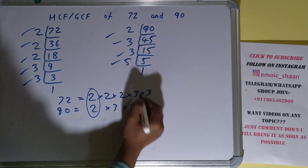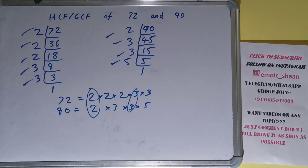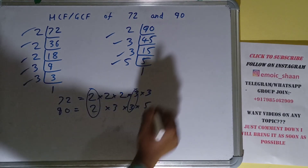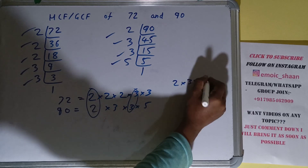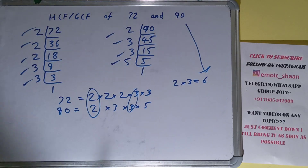We have this 2 in common, and we have this 3 in common. Do we have anything extra in common? No. So the answer will be 2 × 3, which is 6. We can say that the HCF or the GCF of the numbers 72 and 90 is 6.